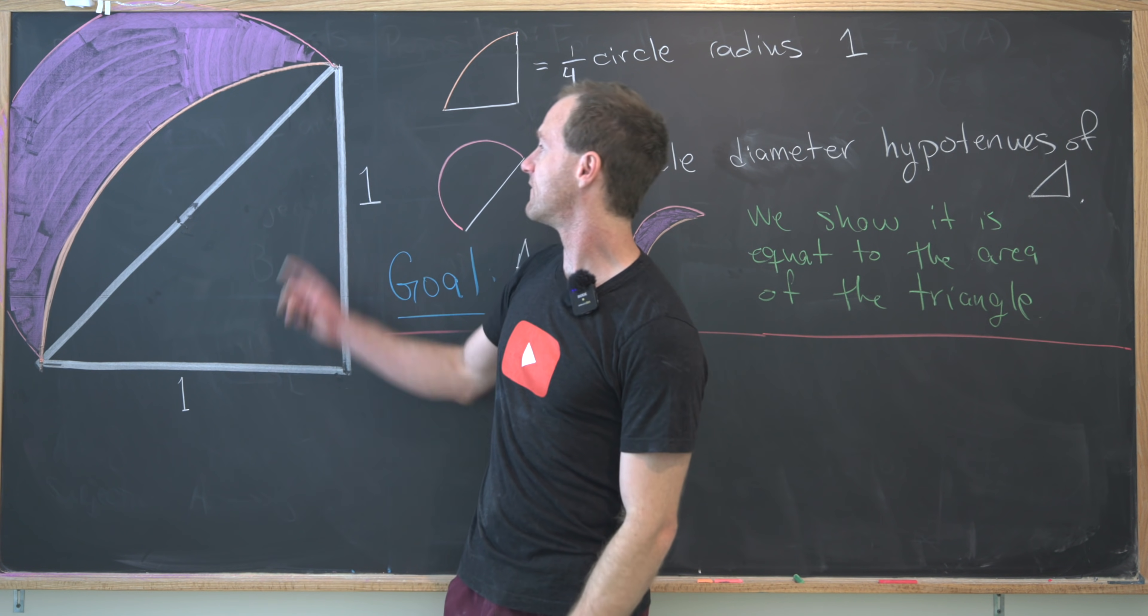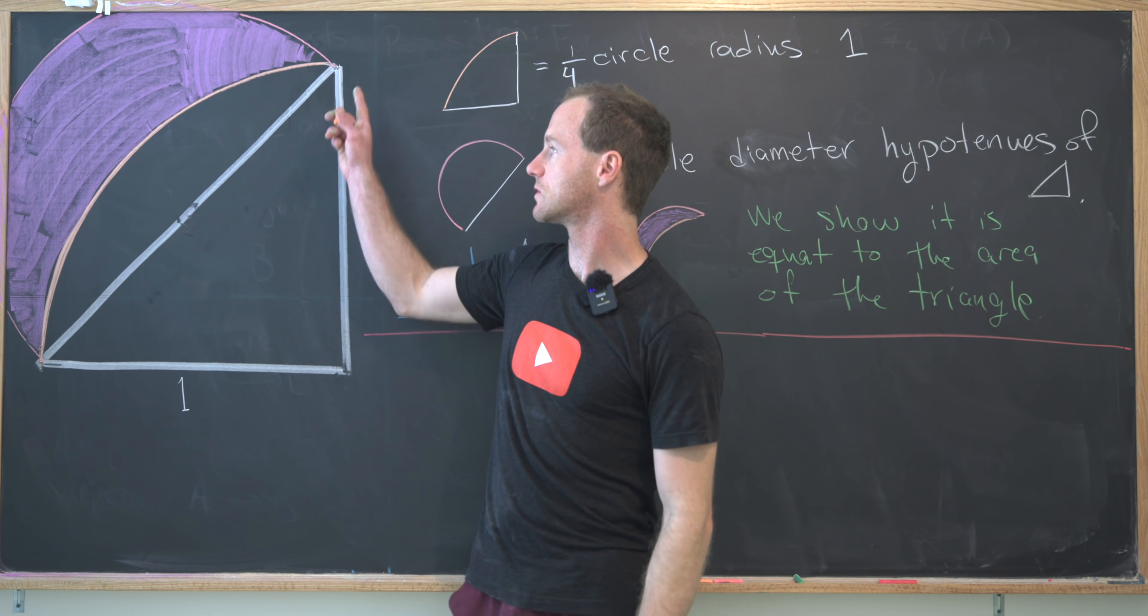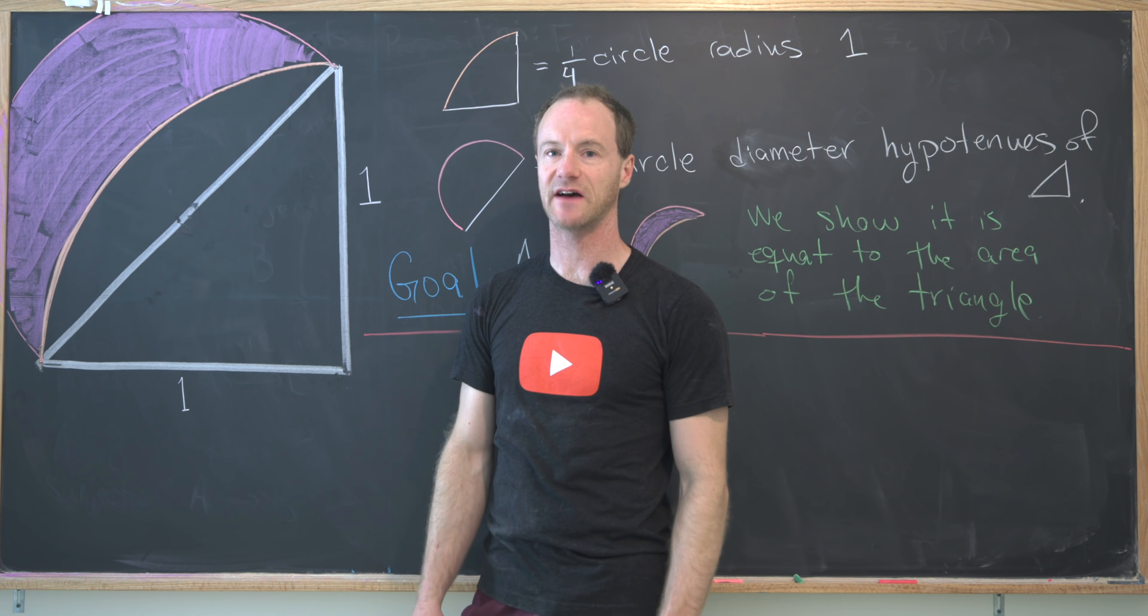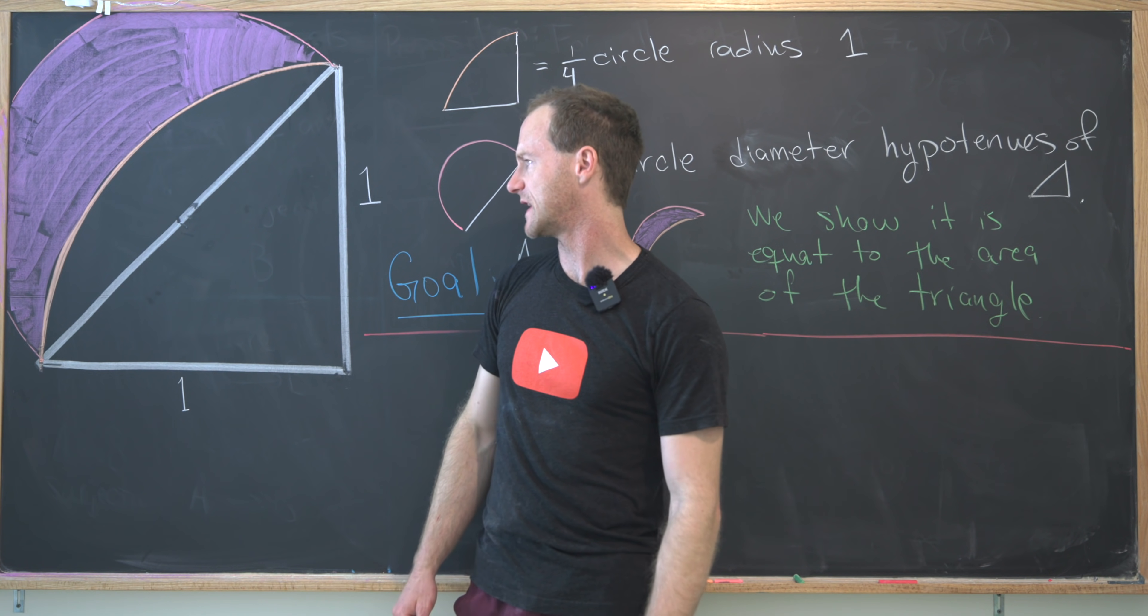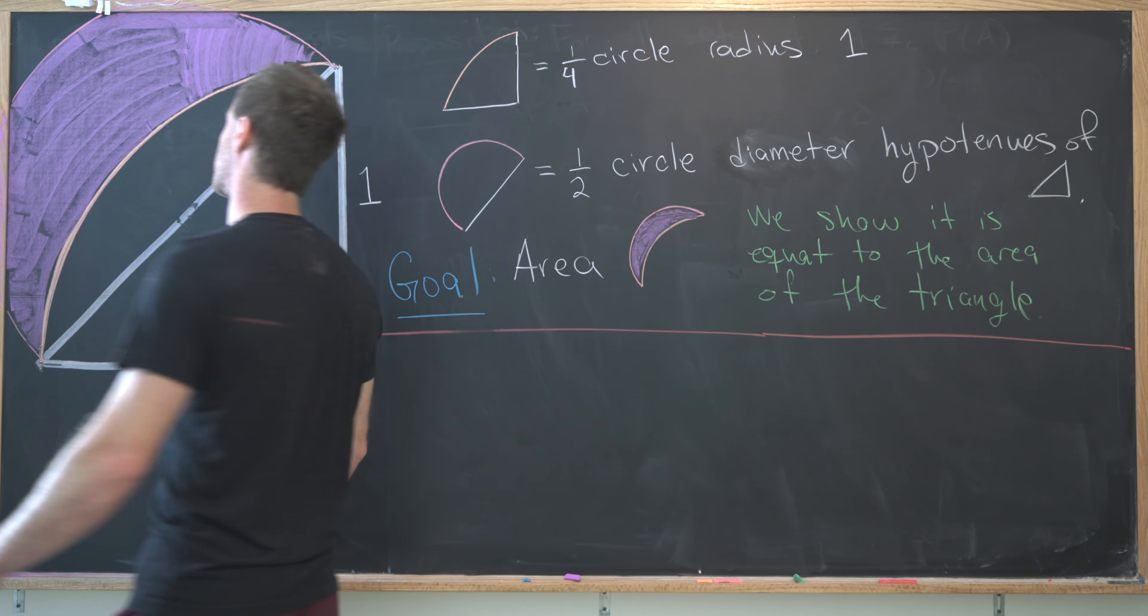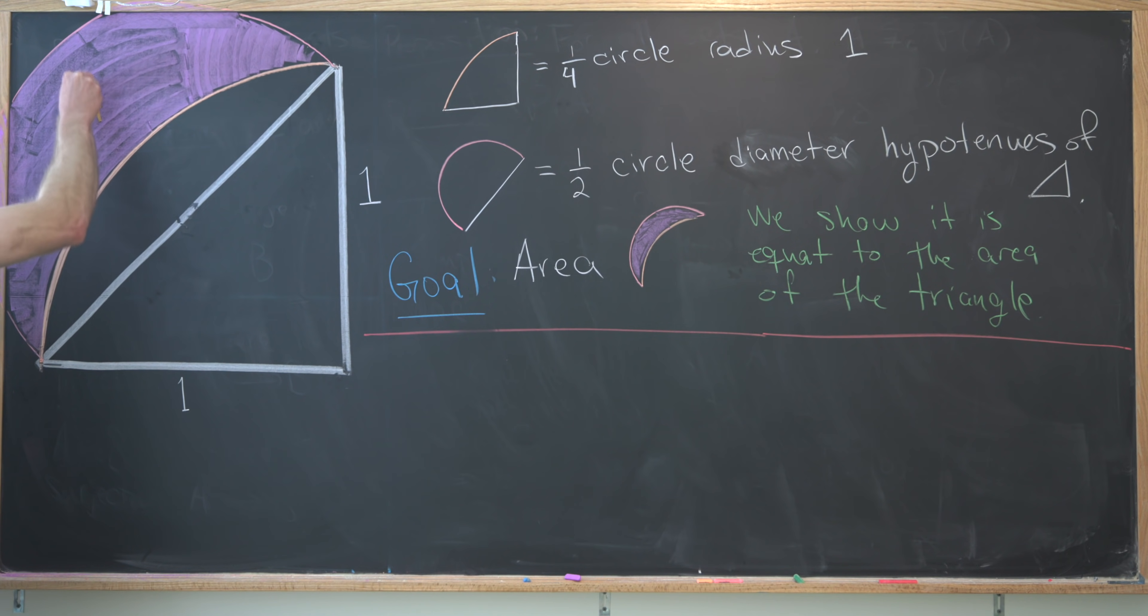We're going to do that by finding the area of this quarter circle as well as the area of this half circle. So in order to get us set up, let's introduce some notation. So I'll call capital A the area of our goal, which is the lune. Then capital B will be the area of the triangle, which should be equal to the area capital A. And then I'll call area C right here, the area of this bit, which is between the quarter circle and the triangle.